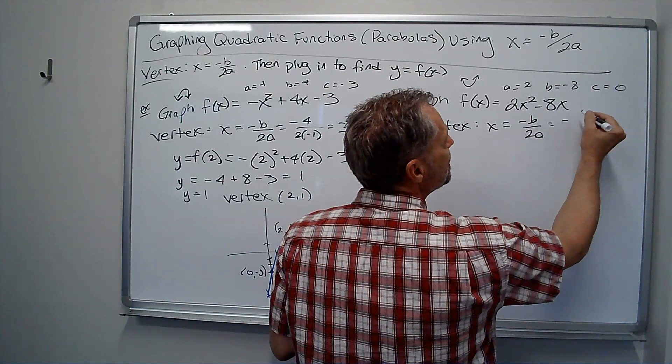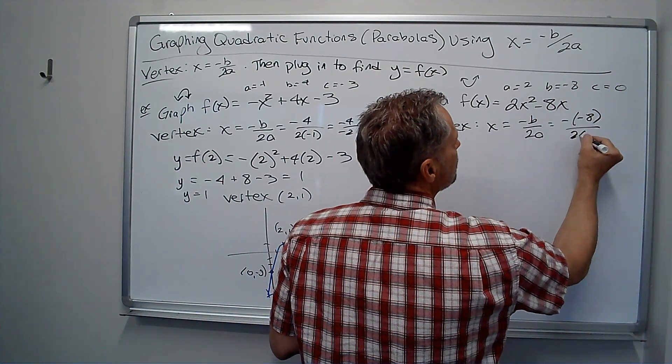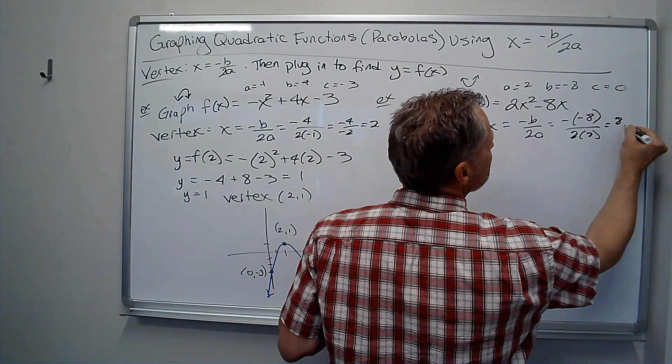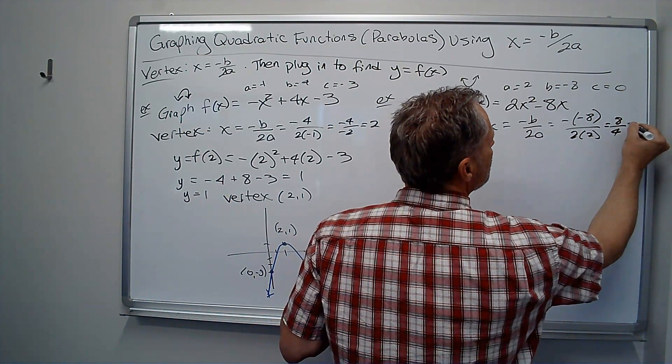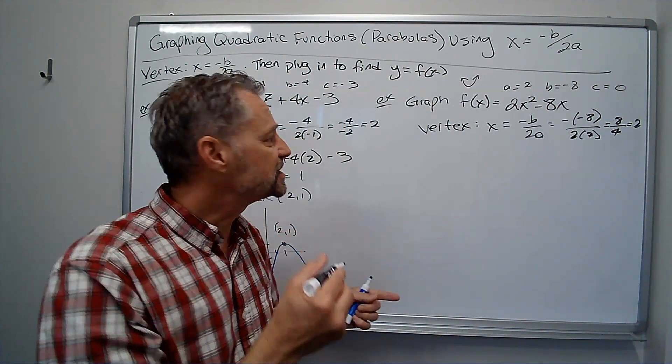So negative b over 2a. Well, b was negative 8, a was 2, so now I have positive 8 over 4, which again is 2, positive 2 again. So let's see what happens.